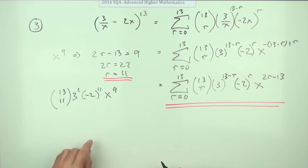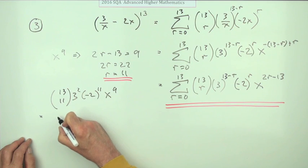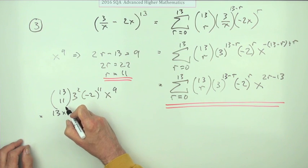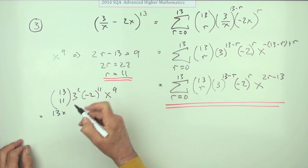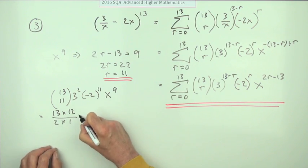I usually like to just work them out, but those numbers are going to be so big. You've got 13 choose 11, I'd start it off I suppose. 13 choose 11 is the same as 13 choose 2, so that's 13 times 12 over 2 times 1. 3 squared I could pop that straight in as 9.